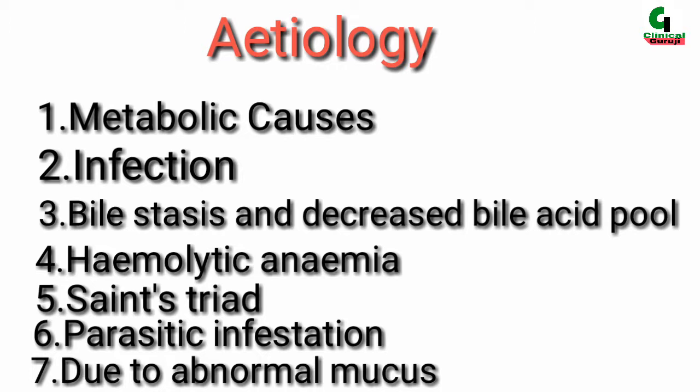Number seven: due to abnormal mucus. It is produced in congenital cystic fibrosis. Gallstones occur in this condition due to impairment of bile flow. So these are all about the etiology of gallstone disease.